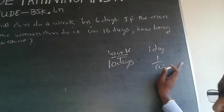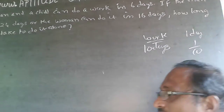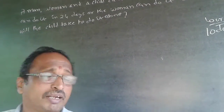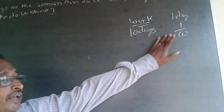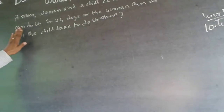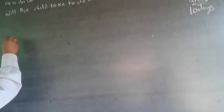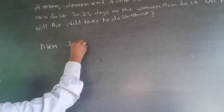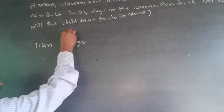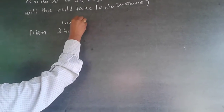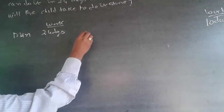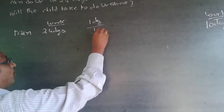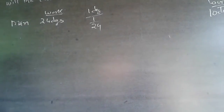Always consider work done in one day. Sometimes the question will also contain man-days, woman-days, and machine-days, but in this question, find out what each person can do in one day. A man can do the work in 24 days, so in one day he will do 1 by 24.